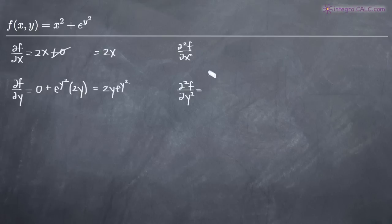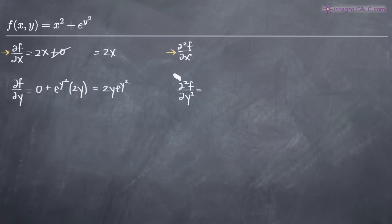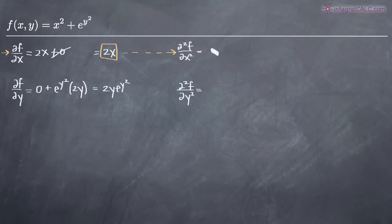Calculating second order partial derivatives, all we're doing is taking the derivative of the first order partial derivative. Because we took the first order partial derivative with respect to x, here we're going to take the partial derivative with respect to x again. We take this value and differentiate with respect to x again — the derivative of 2x is just 2. So the second order partial derivative with respect to x is 2.